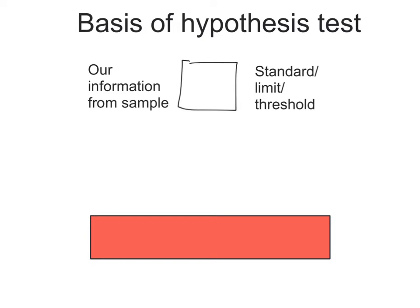To understand that, we need to understand the base of a hypothesis test. We're going to compare something we get from our data — some information from our sample — to some sort of standard used as a basis of comparison. For example, if a probability is less than 0.05 that would be unusual. The standard we always compare to is alpha, no matter which test we're doing.